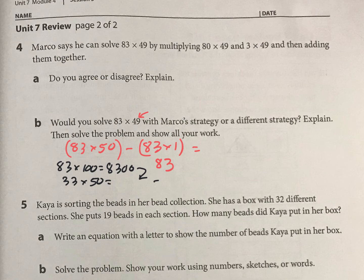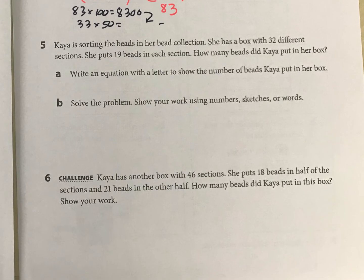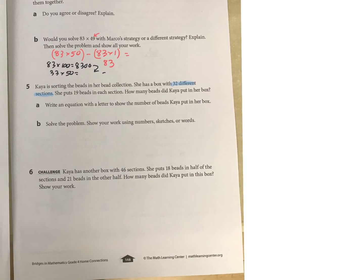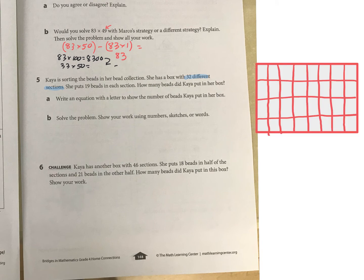Finally, let's look at Kaya and her beads. Imagine this: she's got a box with 32 different sections, so I'm just trying to imagine what the box might look like - maybe something like that. Then in each section she's putting 19 beads. We need to use a letter, so let's say B for beads is equal to 32 times 19.